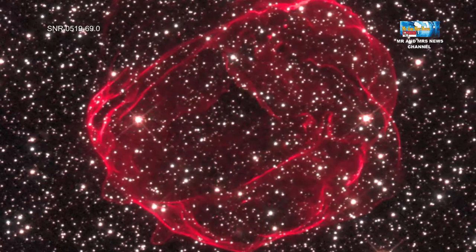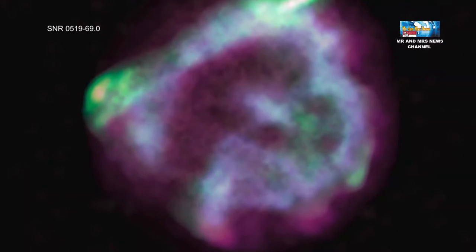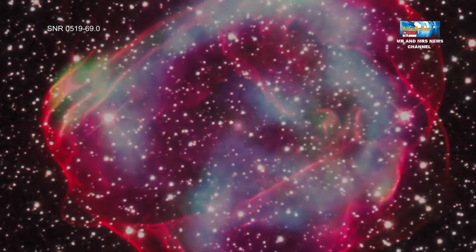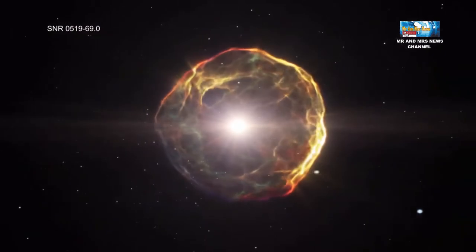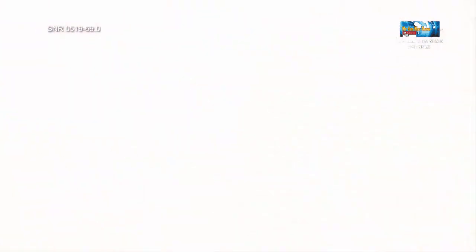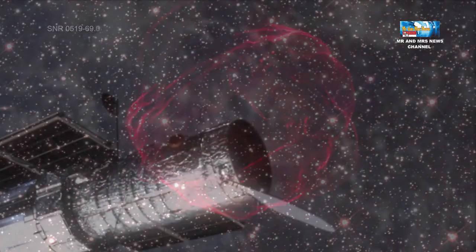Para astronom menggabungkan data dari Chandra dan Hubble dengan data dari pensiunan teleskop luar angkasa Spitzer NASA untuk menentukan berapa lama bintang di SNR0519 meledak dan mempelajari tentang lingkungan tempat supernova ini terjadi. Data ini memberikan para ilmuwan kesempatan untuk memundurkan film evolusi bintang yang telah terjadi sejak itu dan mencari tahu kapan itu dimulai.